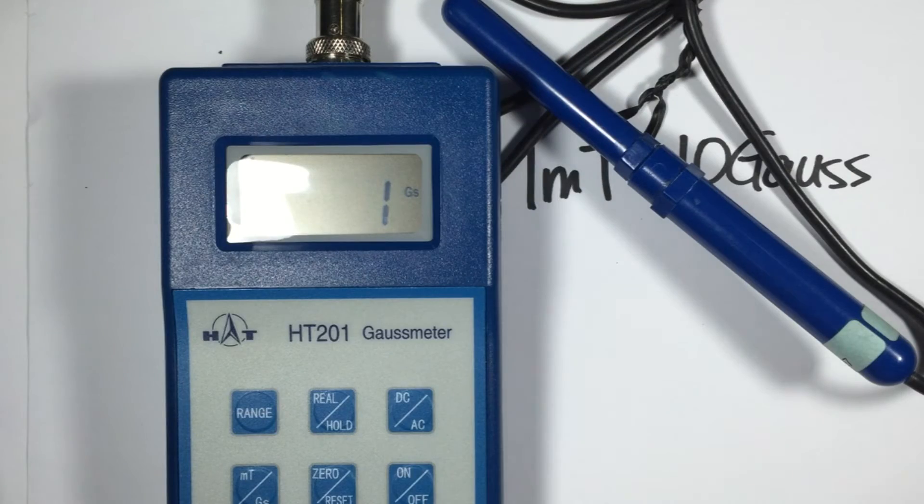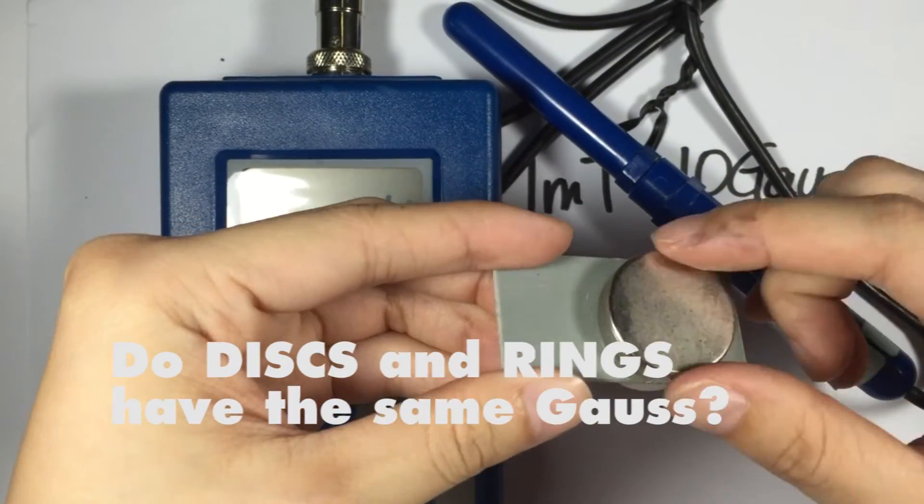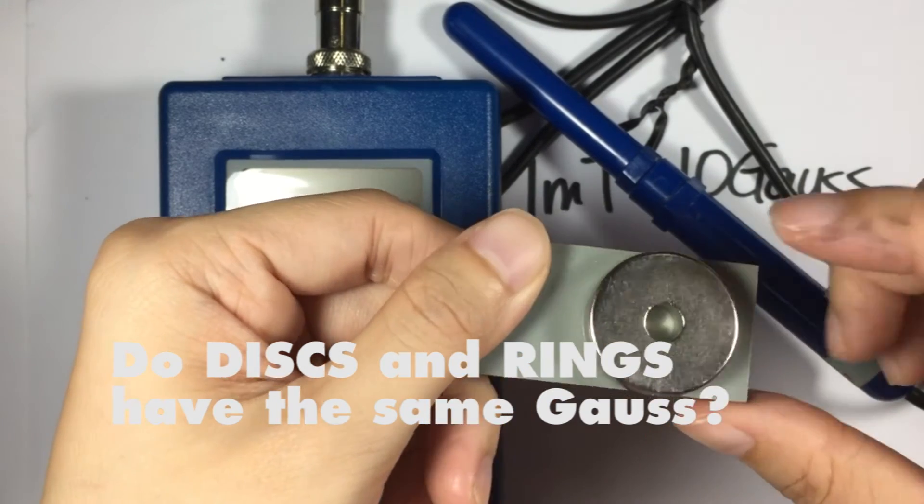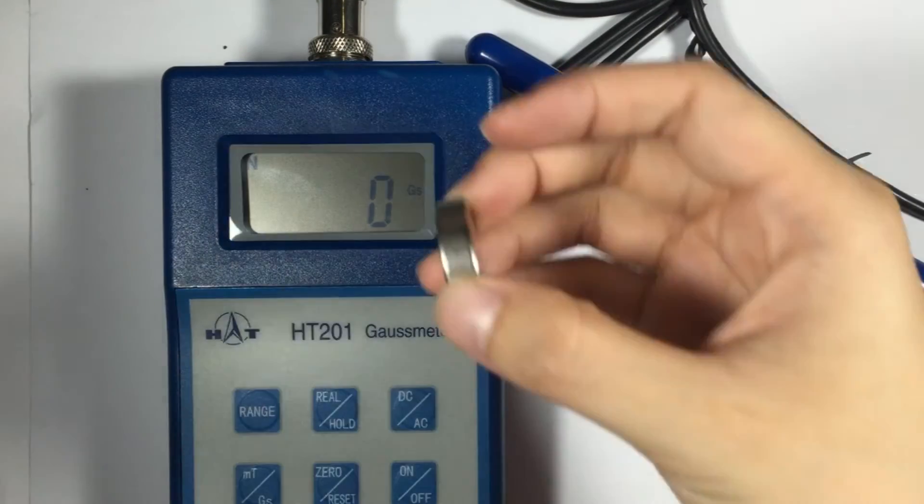So I have here 2 magnets with the same diameter, same length or thickness, but the other one has a hole in it. Okay, so let's try out this disc first.